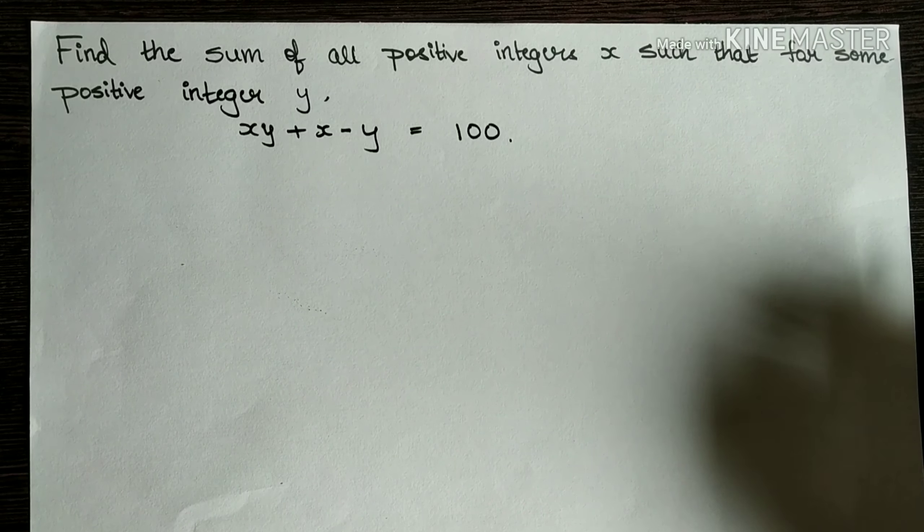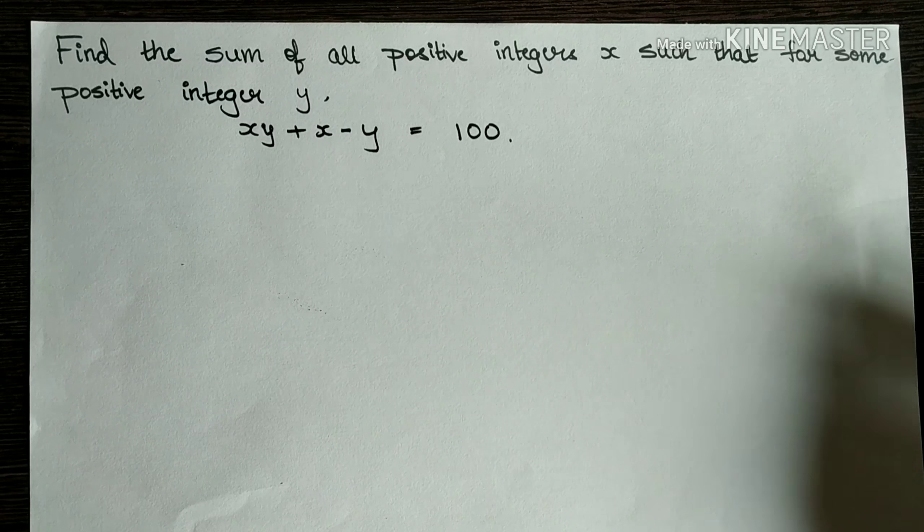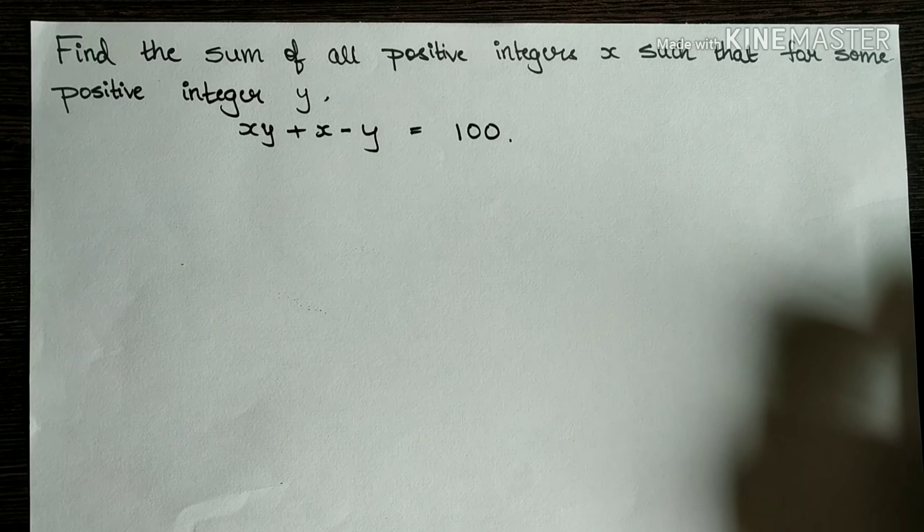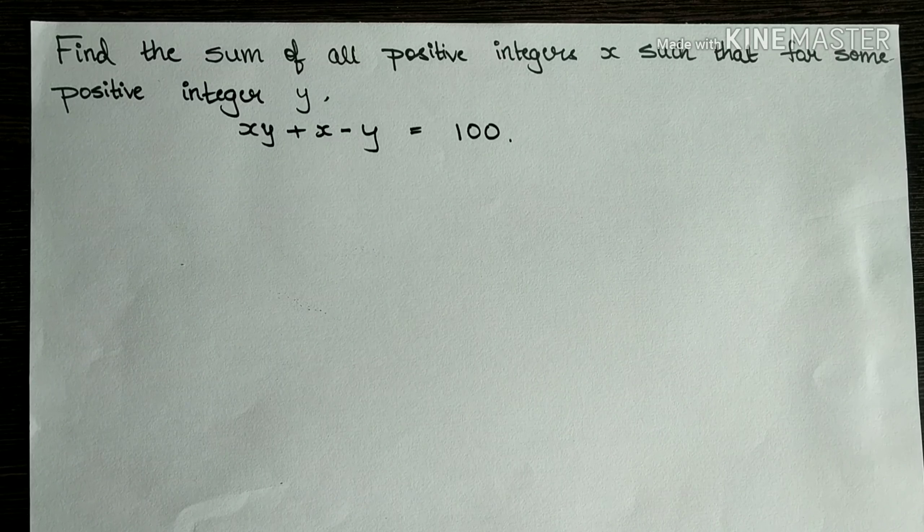Hello everyone, welcome to this new video of Insane Problem Series. So let's read the question. It says find the sum of all positive integers x such that for some positive integer y, xy plus x minus y is equal to 100.